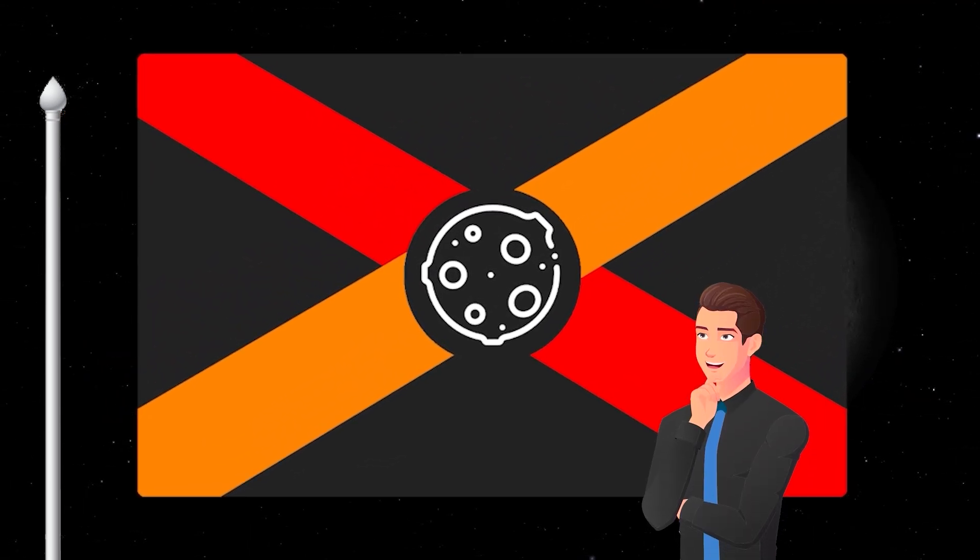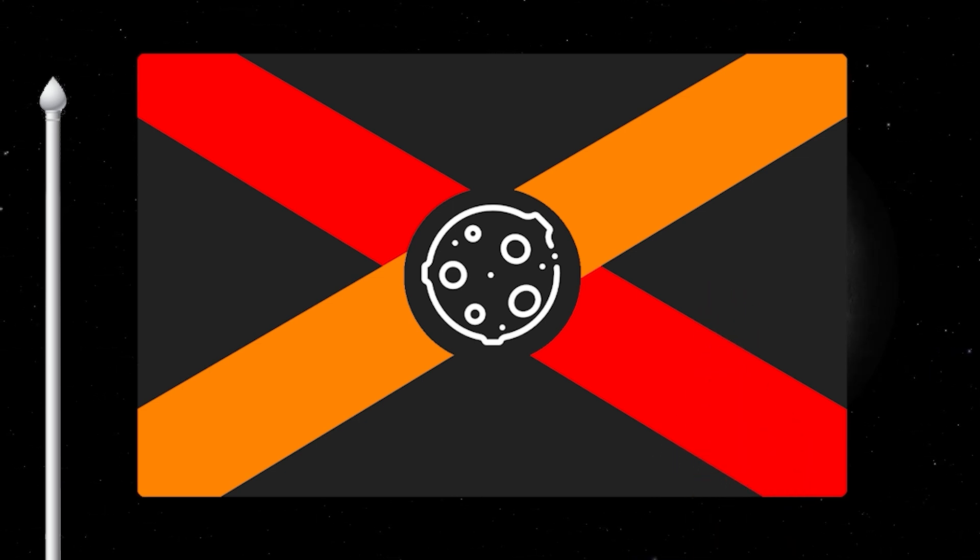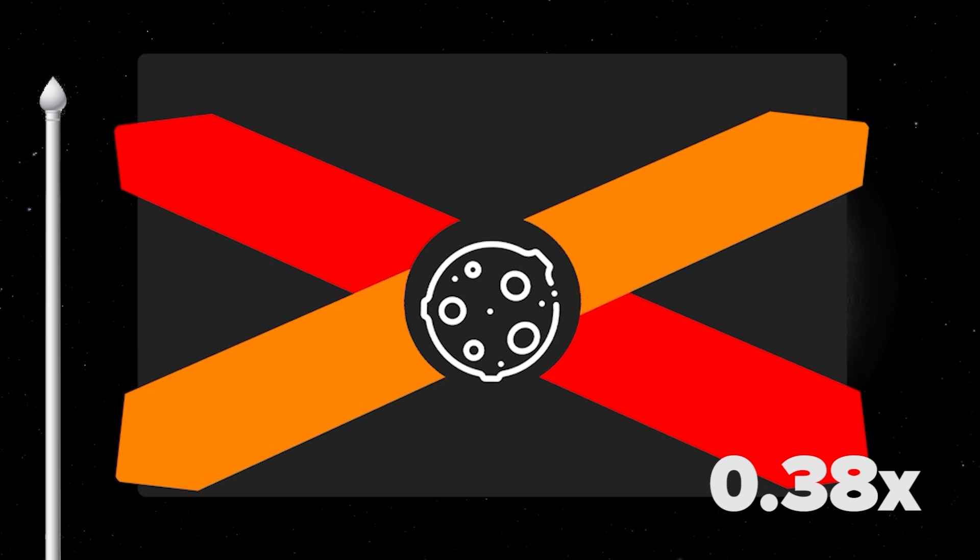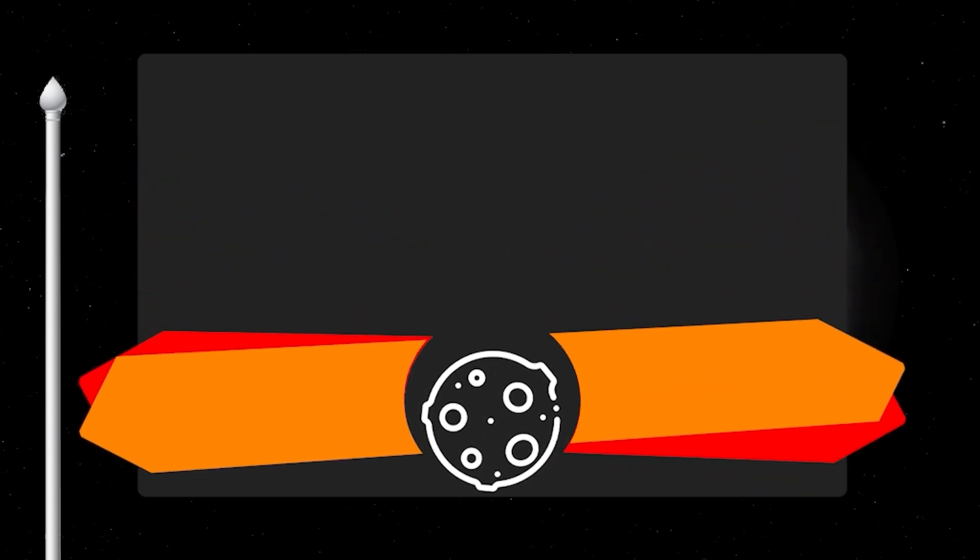Mercury is much smaller than Earth, so its gravitational force is much weaker. Because of the lower gravity, objects on Mercury weigh about 38% of their weight on Earth.